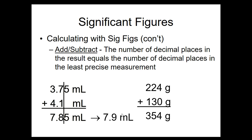Likewise, with two other numbers, 130 is the least precise, so we're going to drop a line after that 3 and round our answer to 350 grams. When doing these kinds of problems, it's very helpful to write the numbers directly below each other, lining up the decimal or the understood decimal.